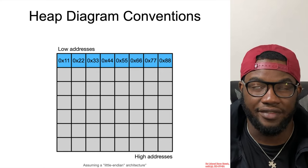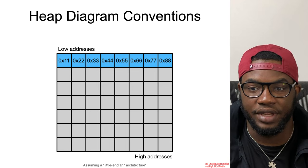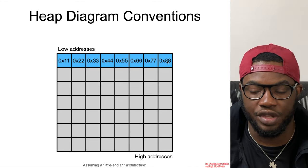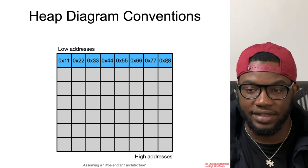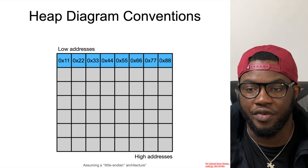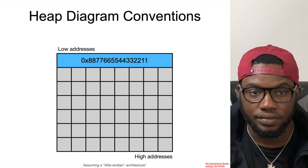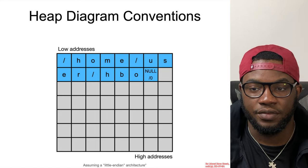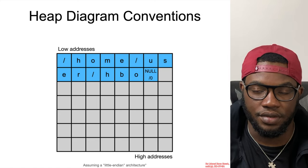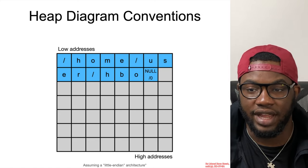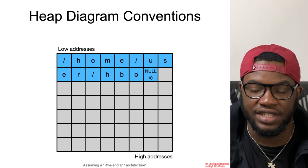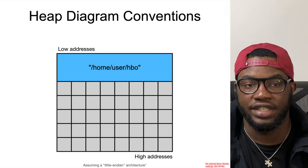If you have an eight-byte integer, the least significant bytes will be on the left side and the most significant bytes will be on the right side. Strings are a little more straightforward compared to stack diagrams — for example, a string like 'home_user_HPO' reads the same way and is represented on the heap.